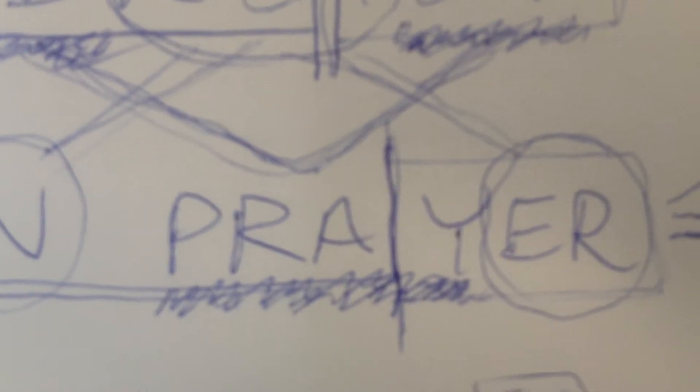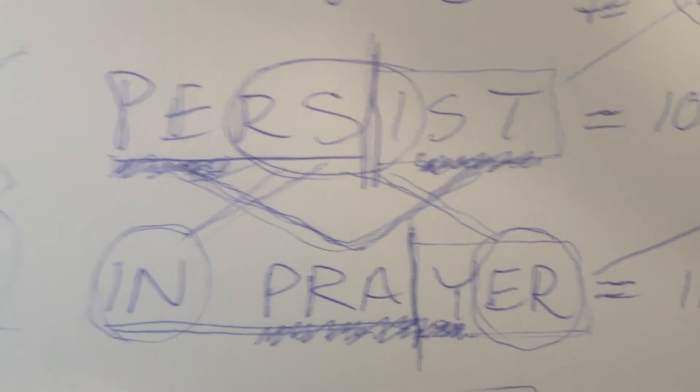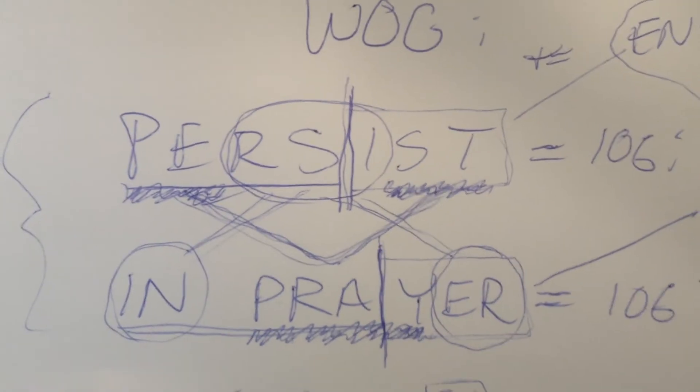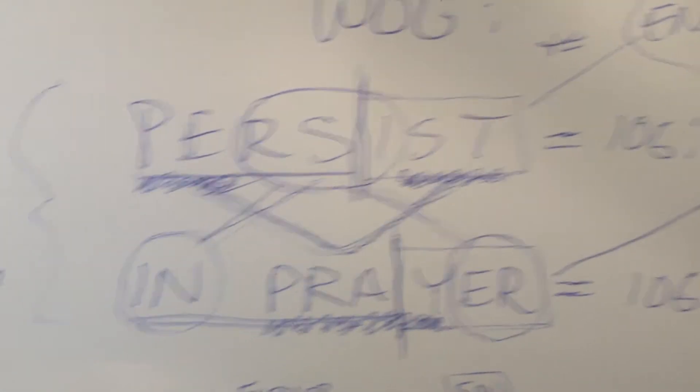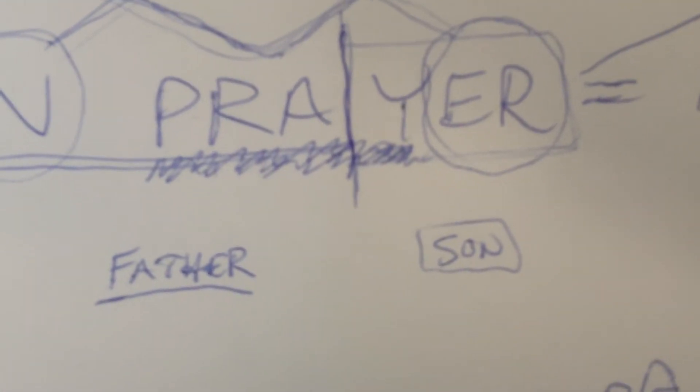And then the word pray, which is 60, parallels joy, is equivalent to that symmetrical pair there. So you have this stunning symmetrical mathematical equivalence between the letters persist and in prayer. And in order, the first revelation as written here is that persist is father, son, in order.